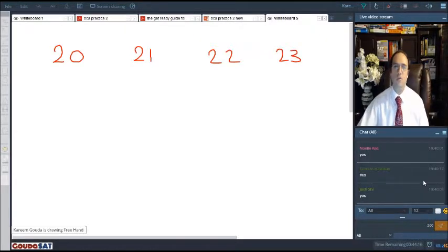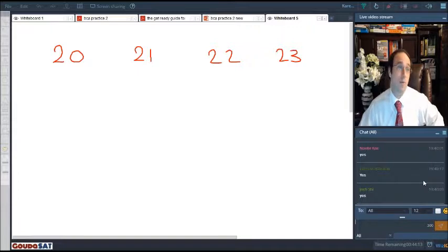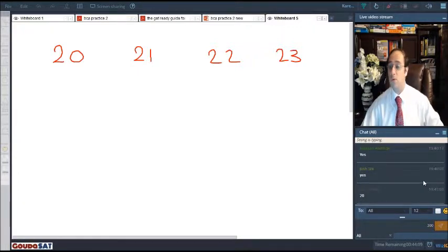The average of these numbers is going to be what? Just approximately. Come on, shoot guys, use the chat box. Rachel, do that too. You have four numbers: 20, 21, 22, 23. What's the average going to be?